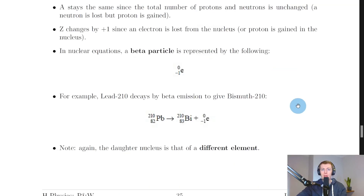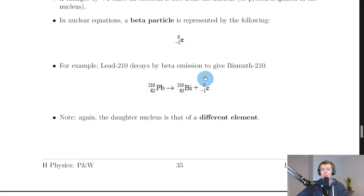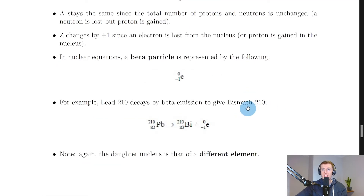In nuclear equations, a beta particle is represented by the symbol e with mass number zero and atomic number minus one. The minus one reflects that losing an electron from the nucleus is equivalent to the atomic number increasing by one. For example, lead-210 decays by beta emission to give bismuth-210 — you'll see the atomic number has gained one, and we have our beta particle, the electron, as a product.